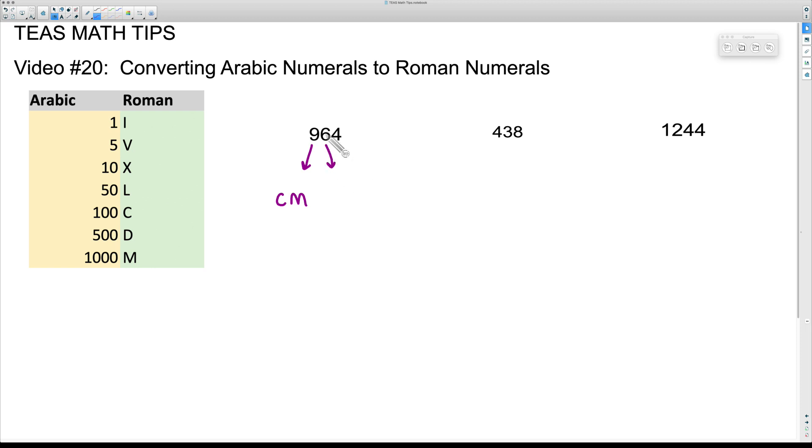Now let's focus on the 60, because this is 900, this is 60 because we have six tens. Well for 60, we can write that as an L for 50 and then an X for 10. You don't want to put six X's beside each other. You don't want to put four or more of any Roman numeral beside each other. Therefore the L is 50, the X is 60.